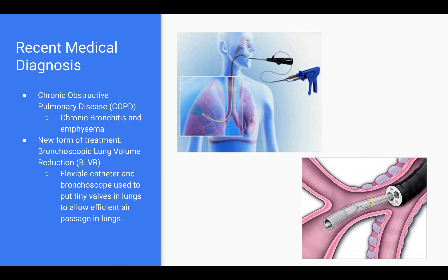For the recent medical diagnoses section: it is primarily about chronic obstructive pulmonary disease, or COPD, which is a mixture of chronic bronchitis and emphysema. A new form of treatment called bronchoscopic lung volume reduction, or BLVR, is conducted with a flexible catheter and a bronchoscope. It is used to place tiny valves in the lungs, specifically away from the diseased areas, rerouting those air sacs so that non-diseased areas can function better, providing relief from shortness of breath and improving the efficacy of gas exchange.